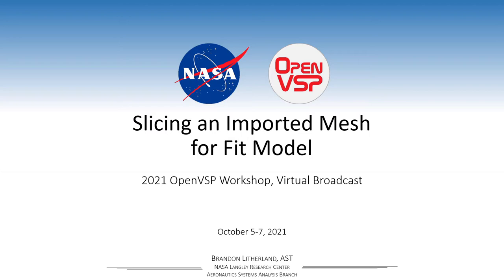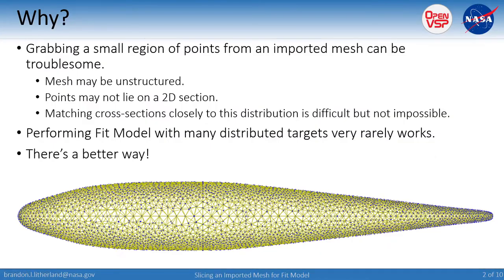You might wonder why you would do this at all — why go through the process of re-cutting a mesh when it's already there? You have the points and technically you can use fit model on any one of those. But sometimes when you're bringing in an imported mesh from CAD as an STL, from CFD gridding software, or a laser scan, the mesh is likely to be unstructured. The points very rarely lie on a 2D planar section, so matching cross sections closely to this distribution is difficult.